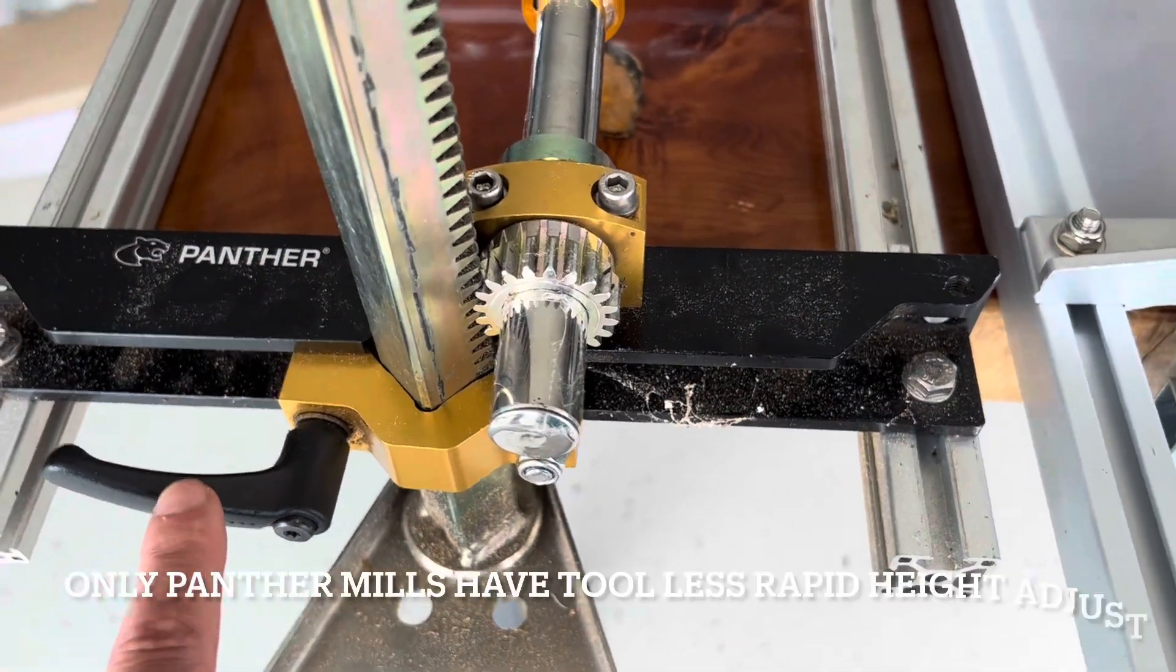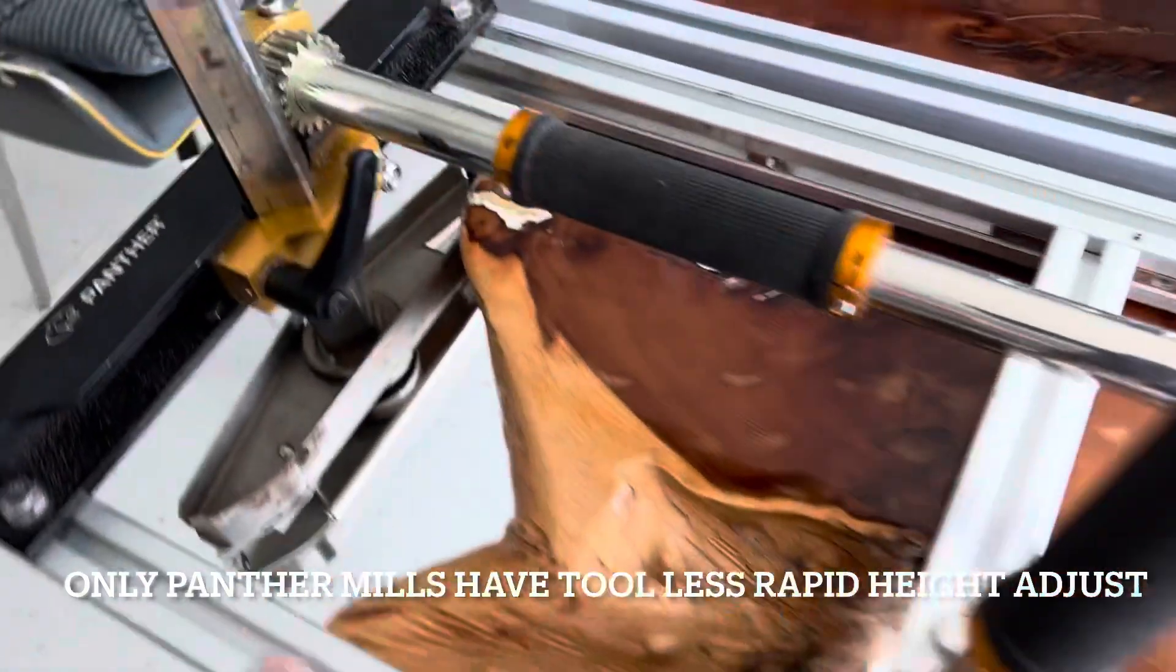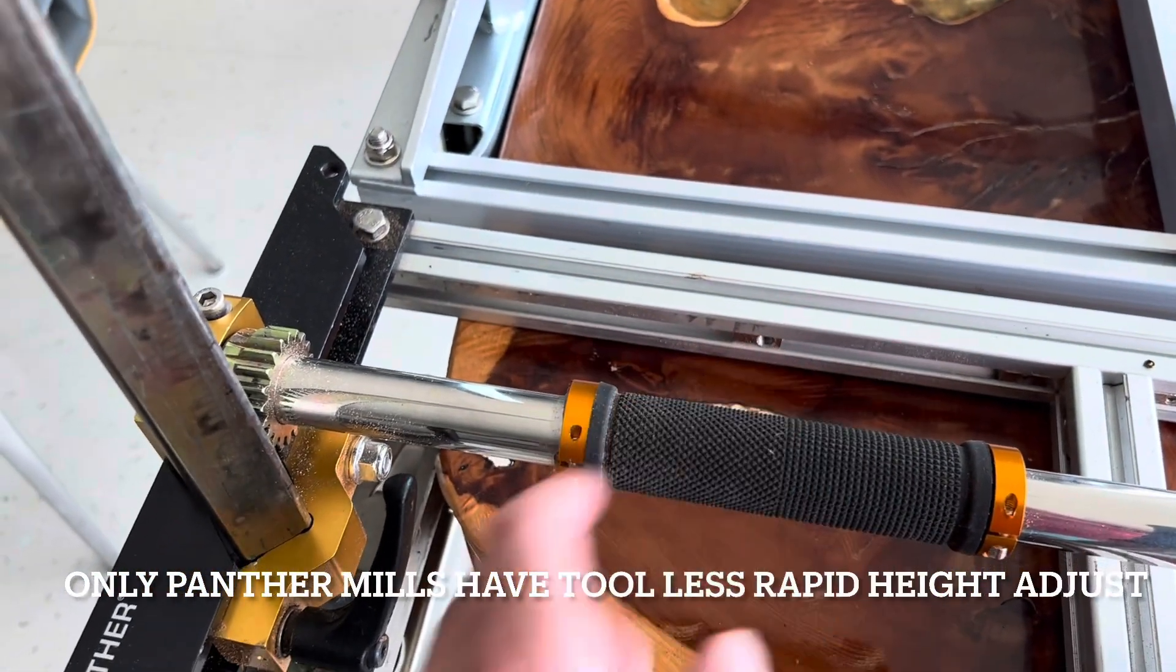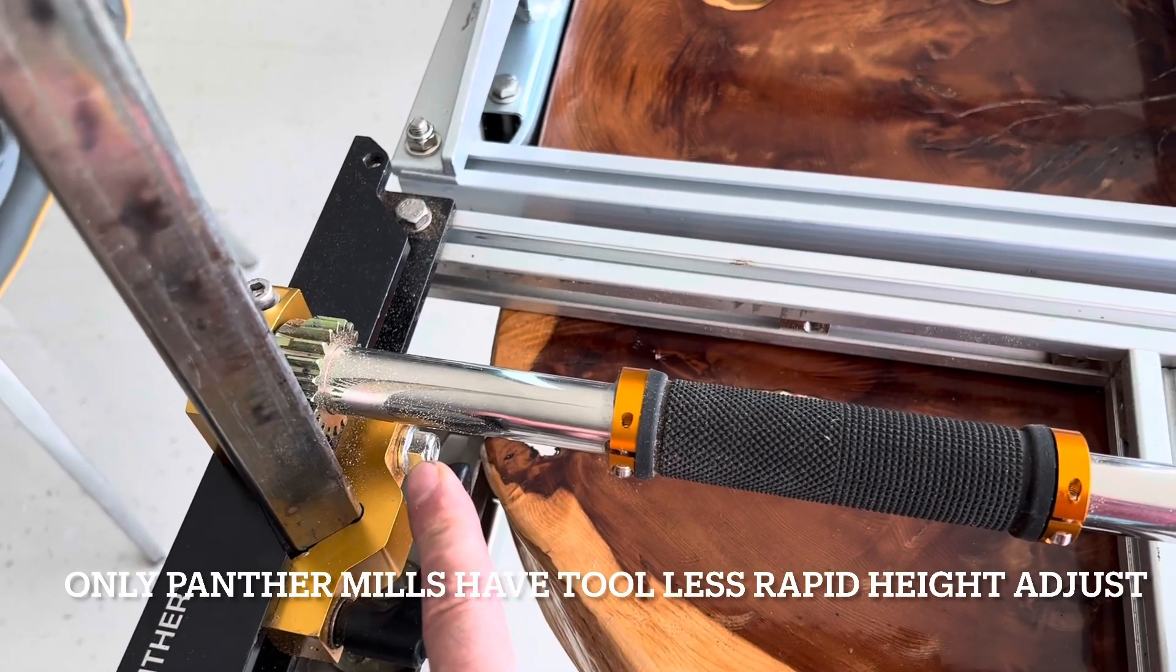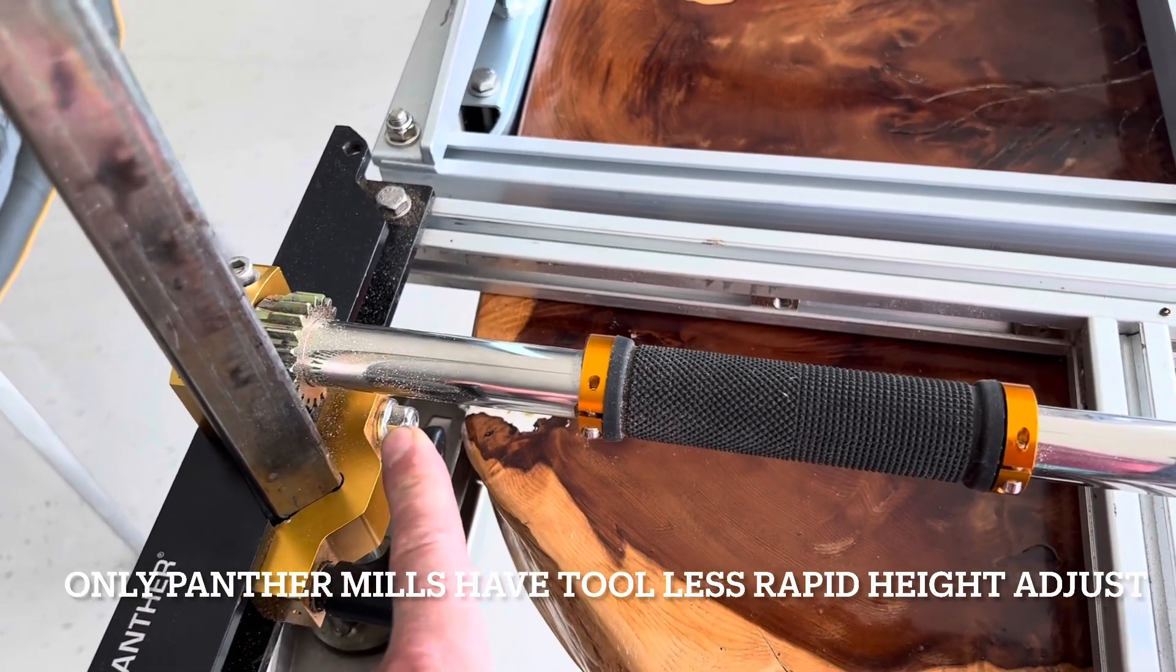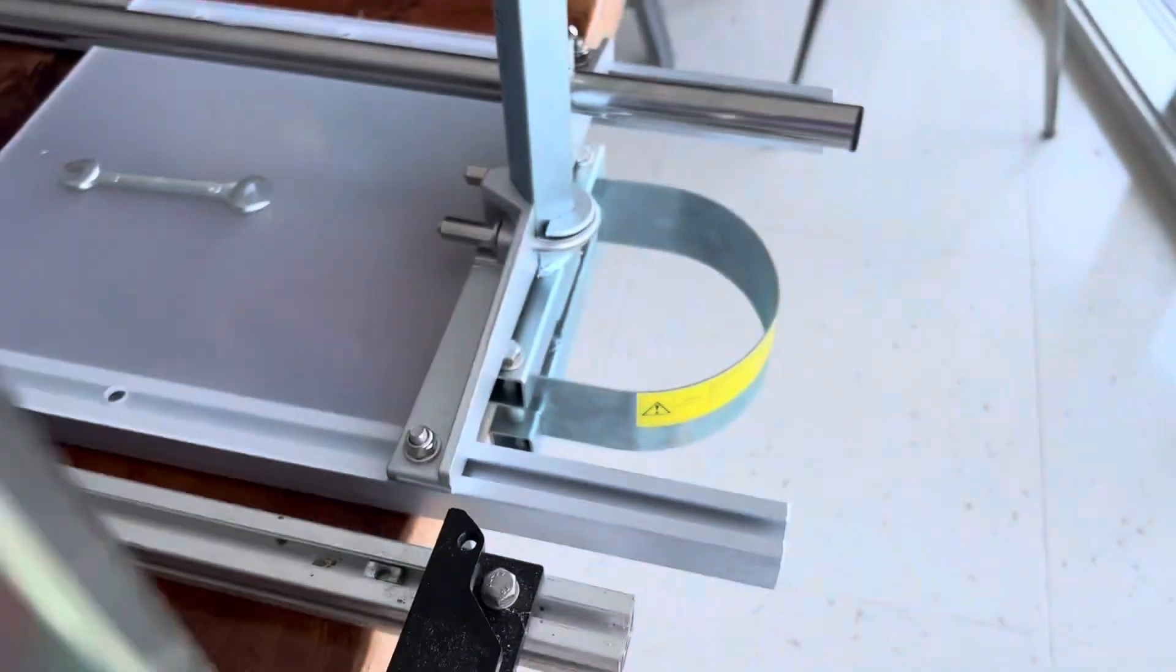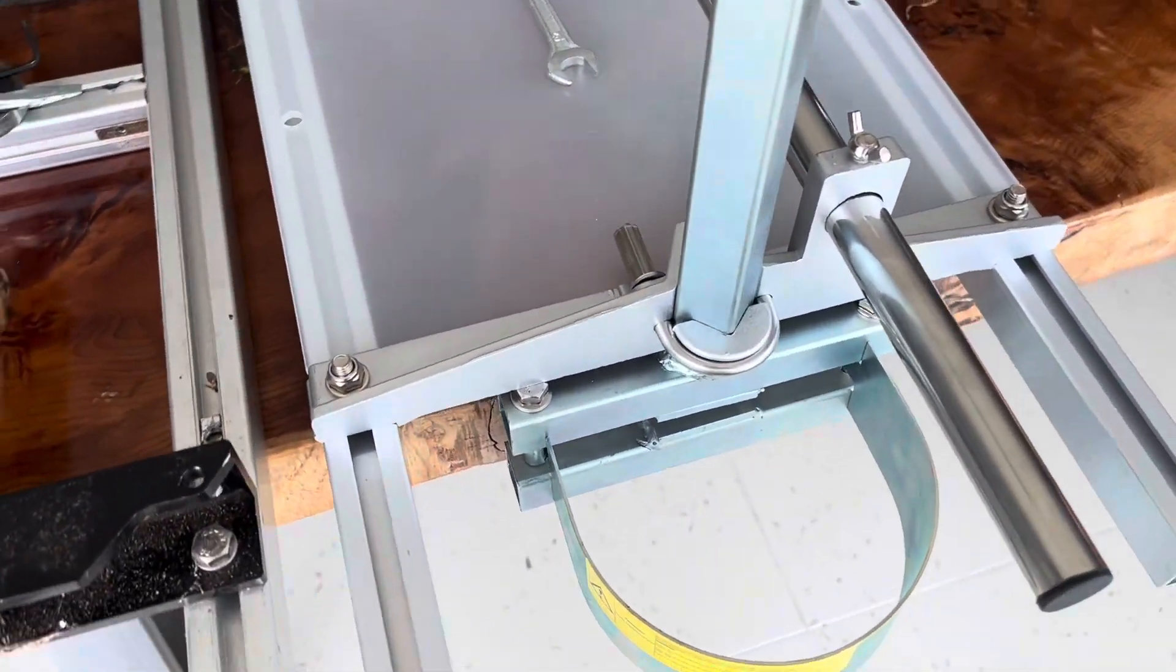One handle here, one handle on the far side here. Rotate this to change the height and then just toollessly twist that back again. So it takes you about 20 seconds on the Panther, it'll take you 90 seconds to a couple of minutes on the Chinese mill.